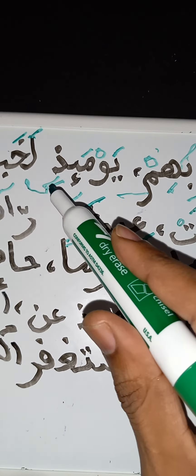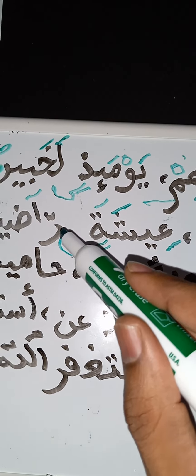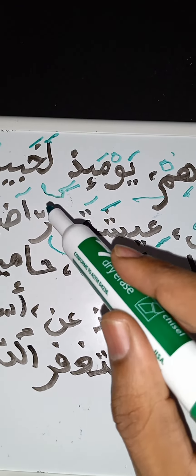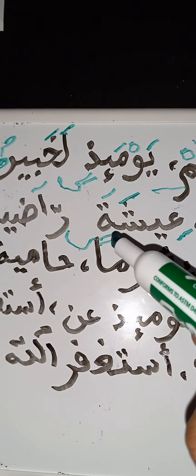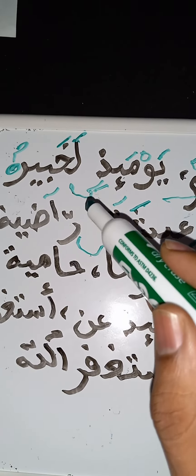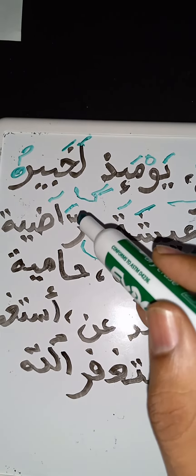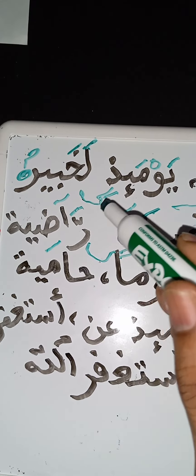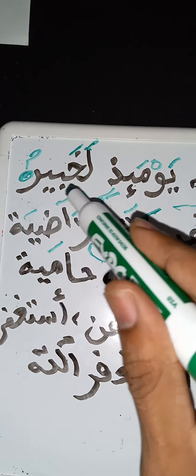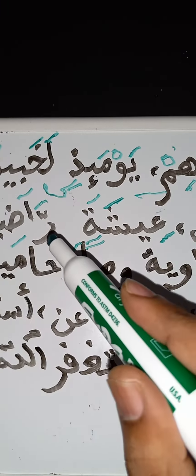Now here we have a tanwin — kasratayni. Subhanallah, Allah subhanahu wa ta'ala made the ra come after it, and we were just talking about the two letters lam and ra that do not nasal when you combine them with the tanwin or the noon usakin, or when they come after the tanwin or noon usakin. Ra — it is just 'ra': dal kasra 'ra-di,' ya fatha 'ya,' 'ra-diya.' So what we have thus far is 'ayshatin ar-ra-diya.'